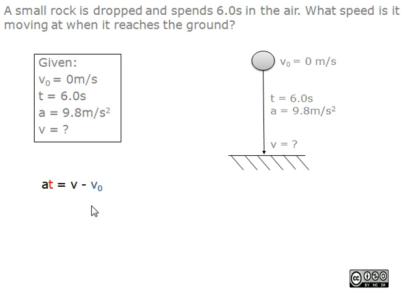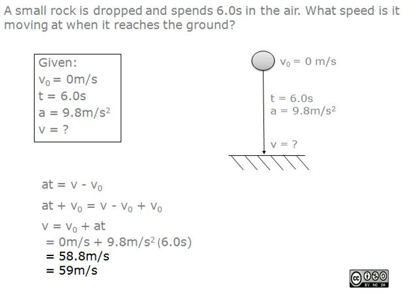A times T equals V minus V0. We then isolate the variable V. Plug 0 meters per second for V0, 9.8 meters per second squared for A, and 6.0 seconds for T. The final answer is 59 meters per second.